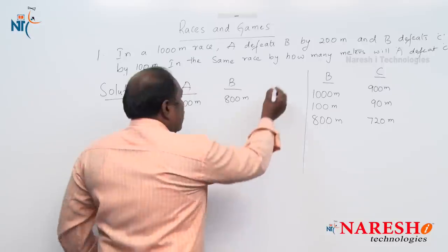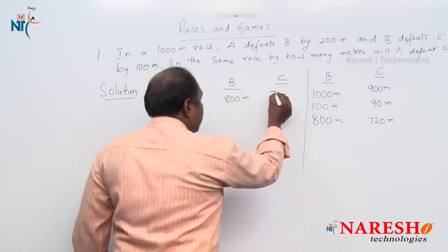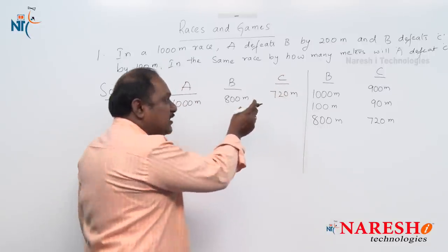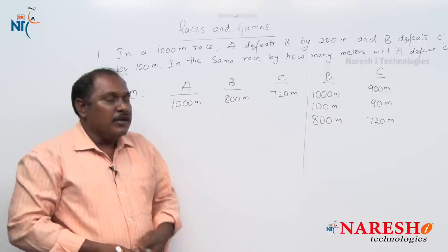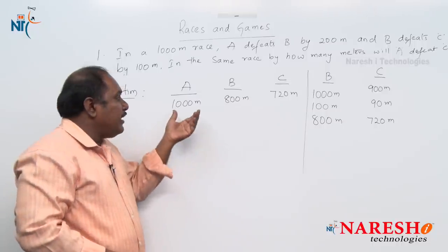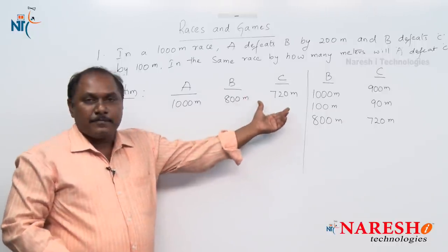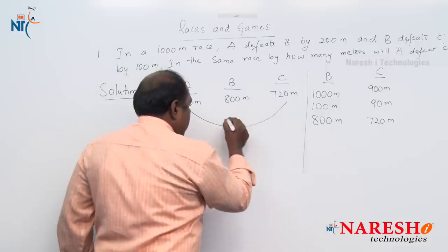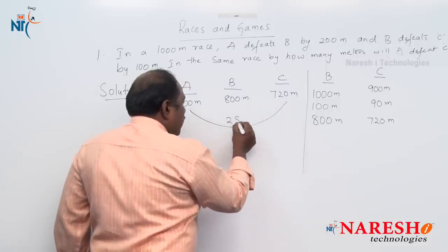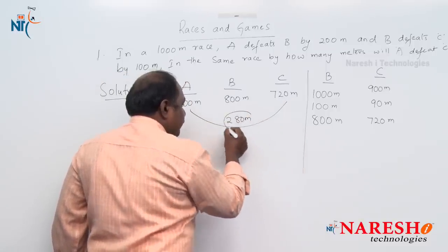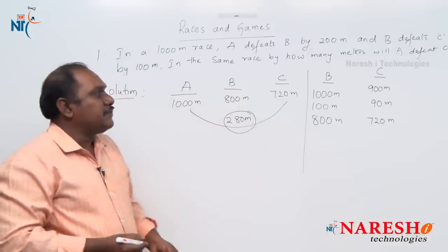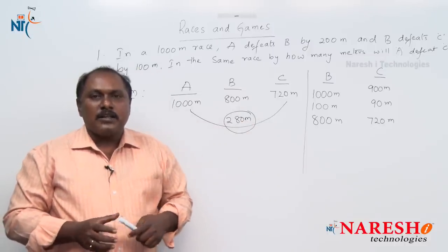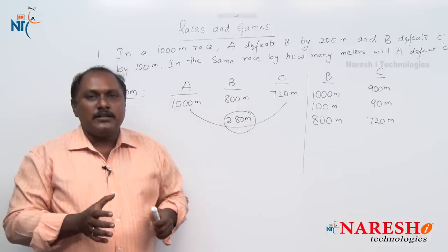By the time A completed the race, C has run only 720 meters. So by how many meters did A defeat C? A defeated C by 280 meters. This is the answer for this question. Let us discuss the next question in this chapter.